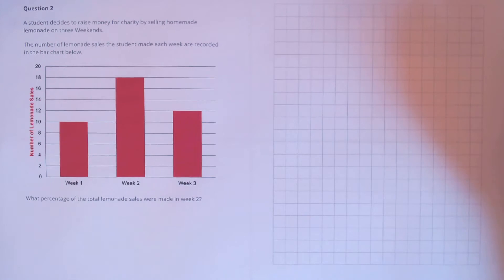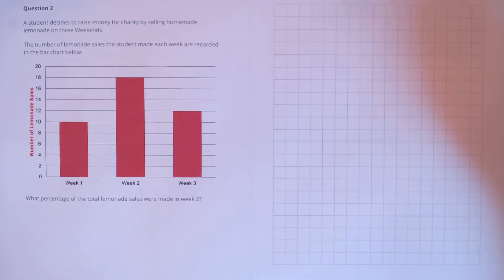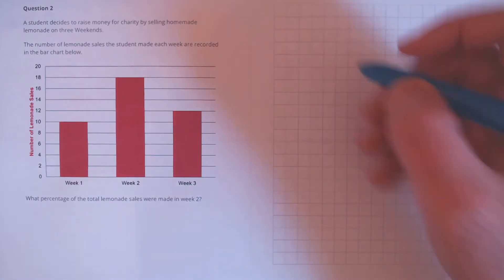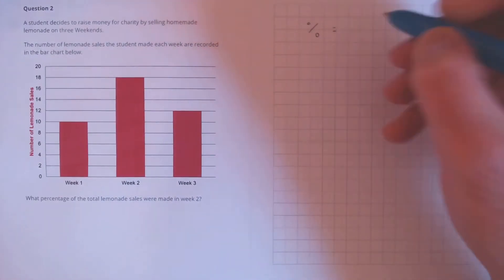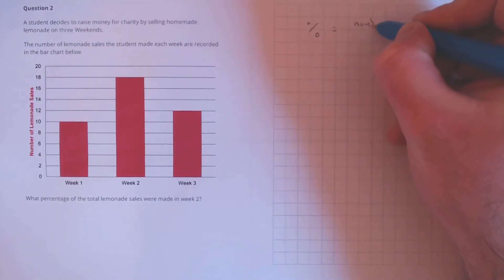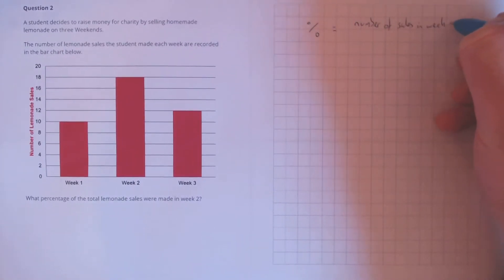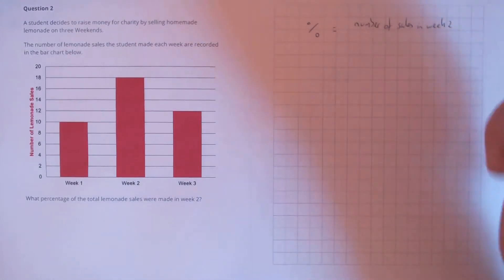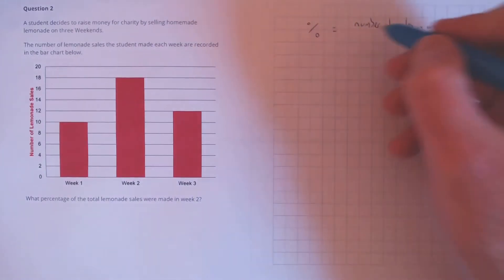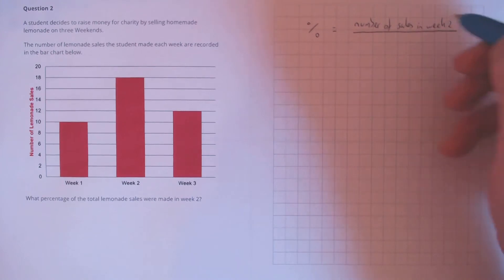Question 2. A student decides to raise money for charity by selling homemade lemonade on three weekends. The number of lemonade sales a student made each week are recorded in the bar chart below. What percentage of the total lemonade sales were made in week two? To calculate the percentage, we first need the number of sales in week two divided by the total number of sales.